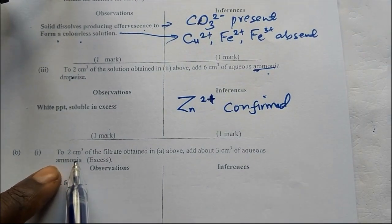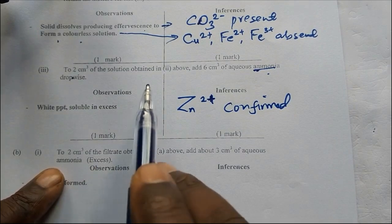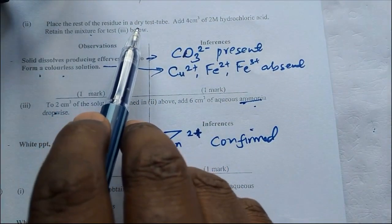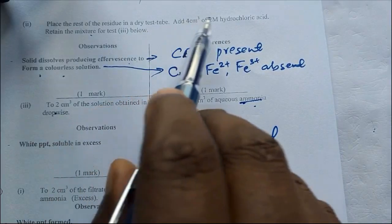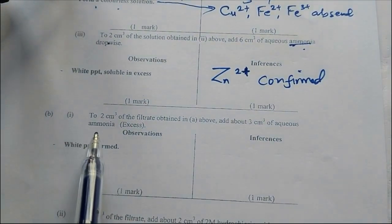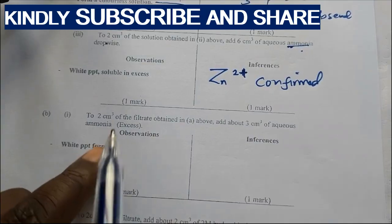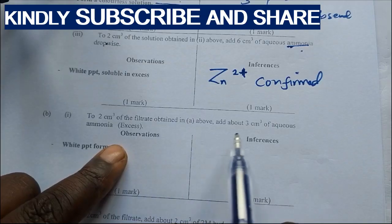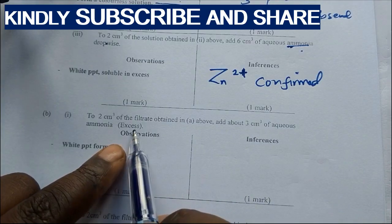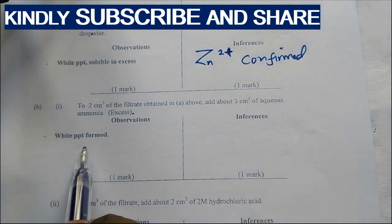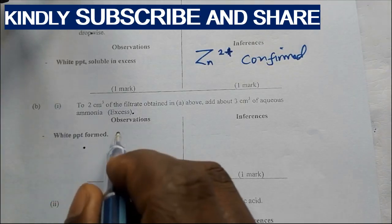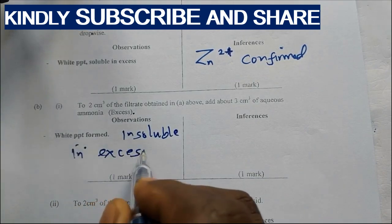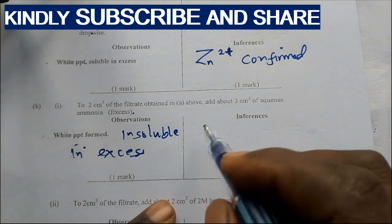To 2 cm³ of the filtrate, remember now we were using the solution from the reaction of the residue with the acid. Now there is a solution we had, the filtrate of the solid. To the second portion of the filtrate obtained in Roman 2 above, add about 3 cm³ of aqueous ammonia in excess. A white precipitate is formed, which does not dissolve, insoluble in excess.